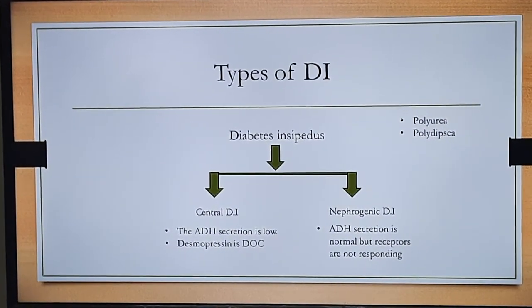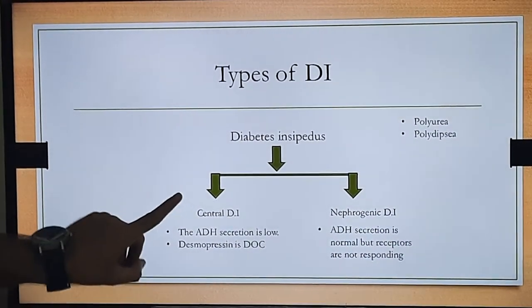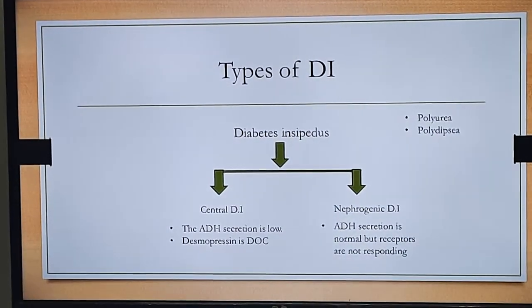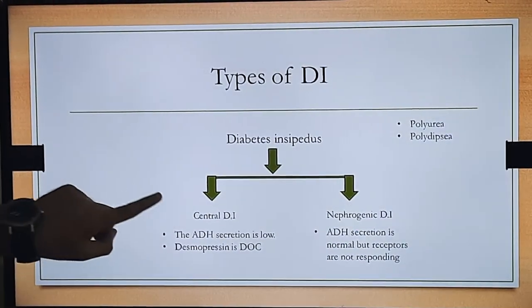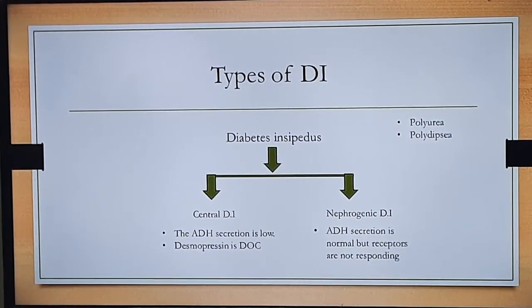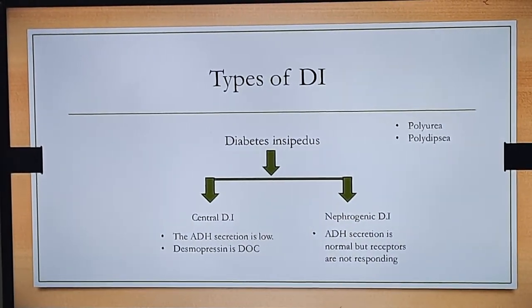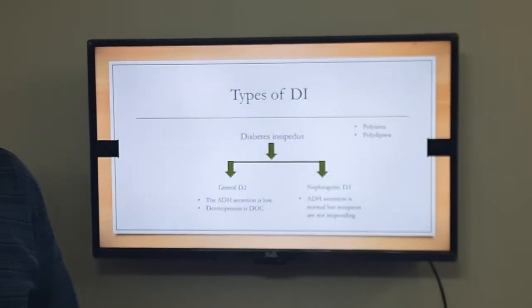There are two important types of diabetes insipidus: central diabetes insipidus and nephrogenic diabetes insipidus. In central DI, ADH secretion from the brain is low, so we give ADH analogs. The drug of choice for central diabetes insipidus is desmopressin.